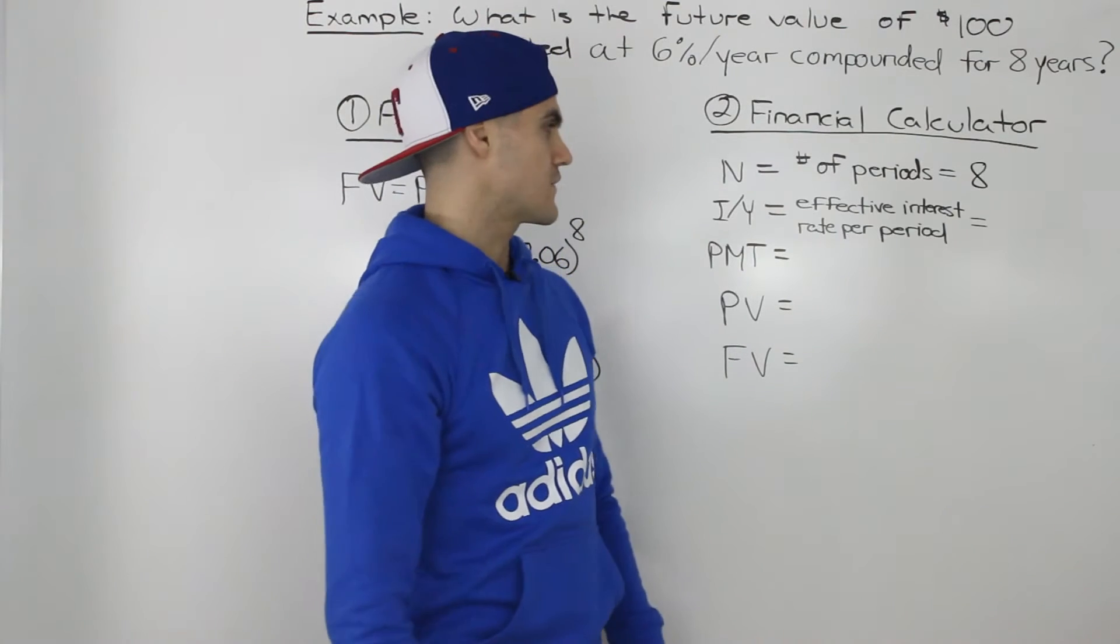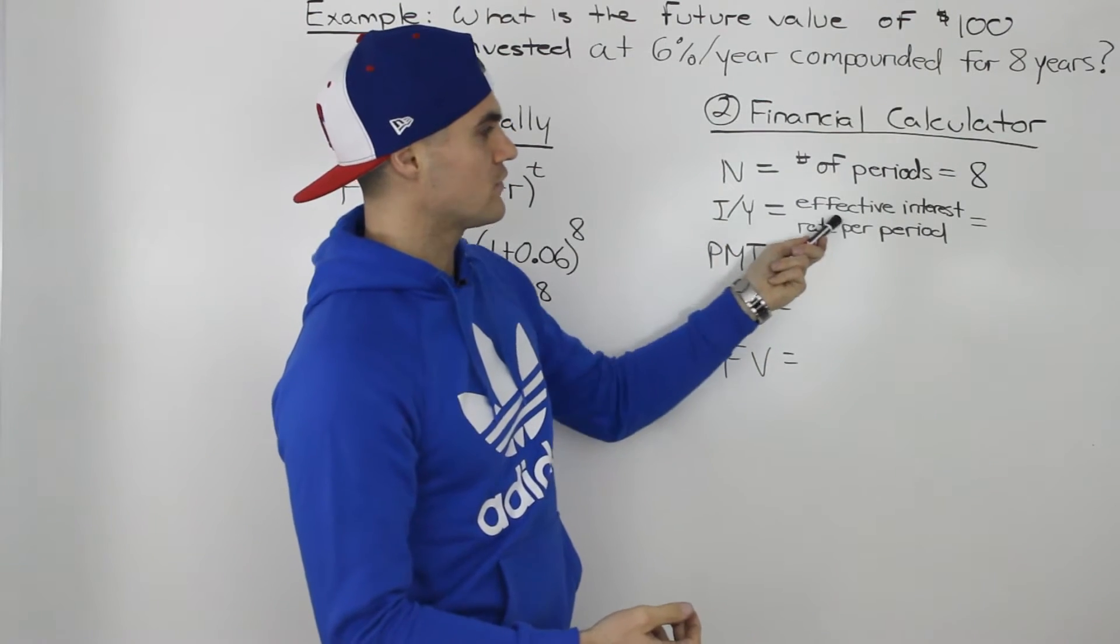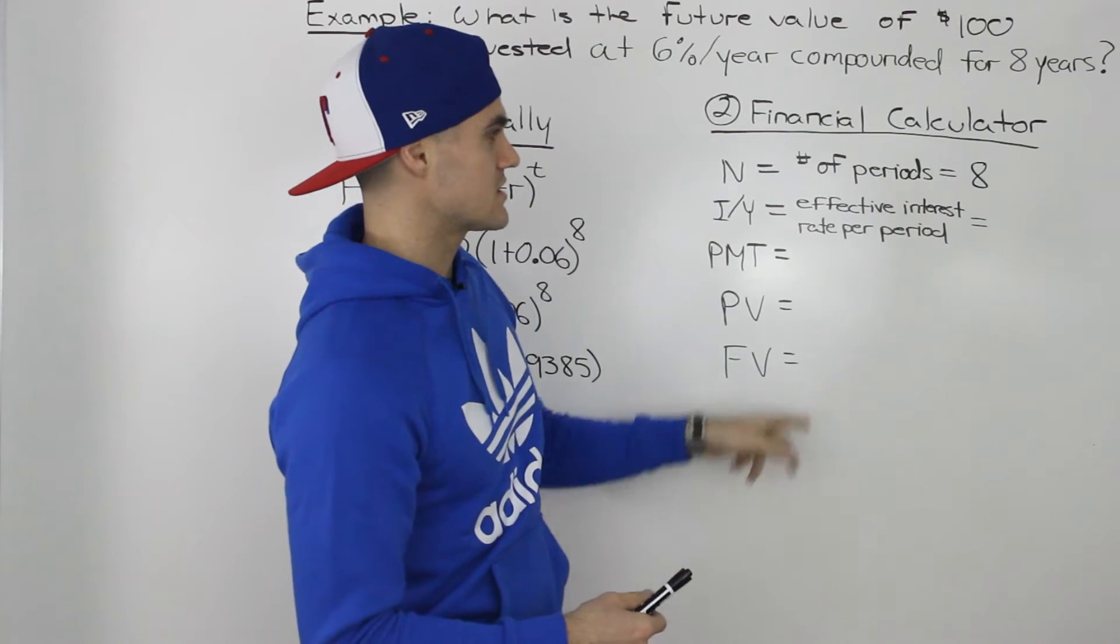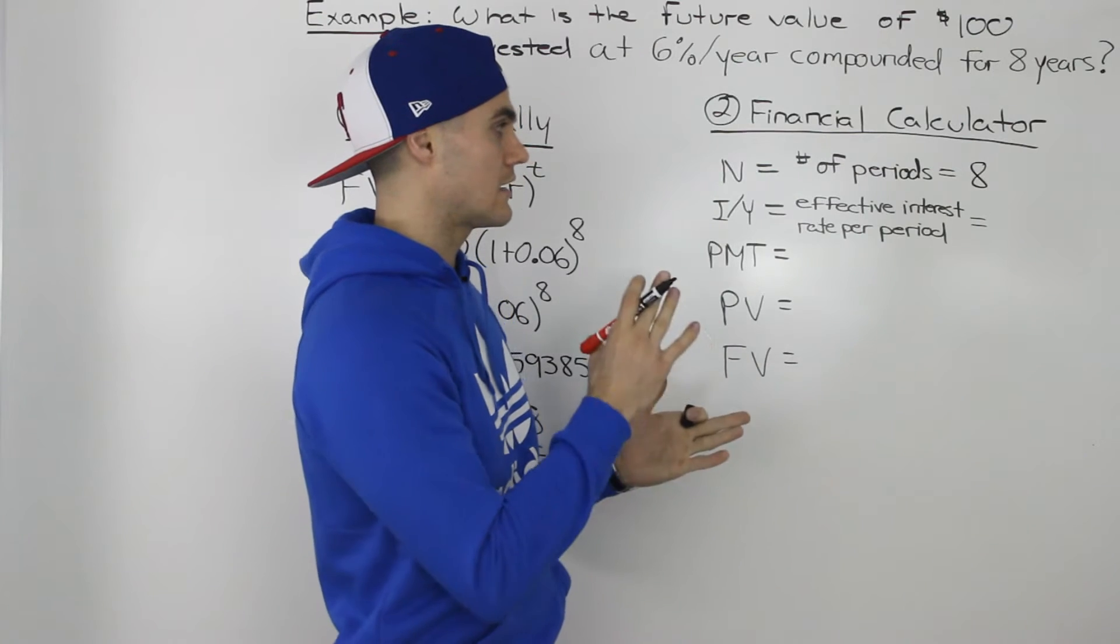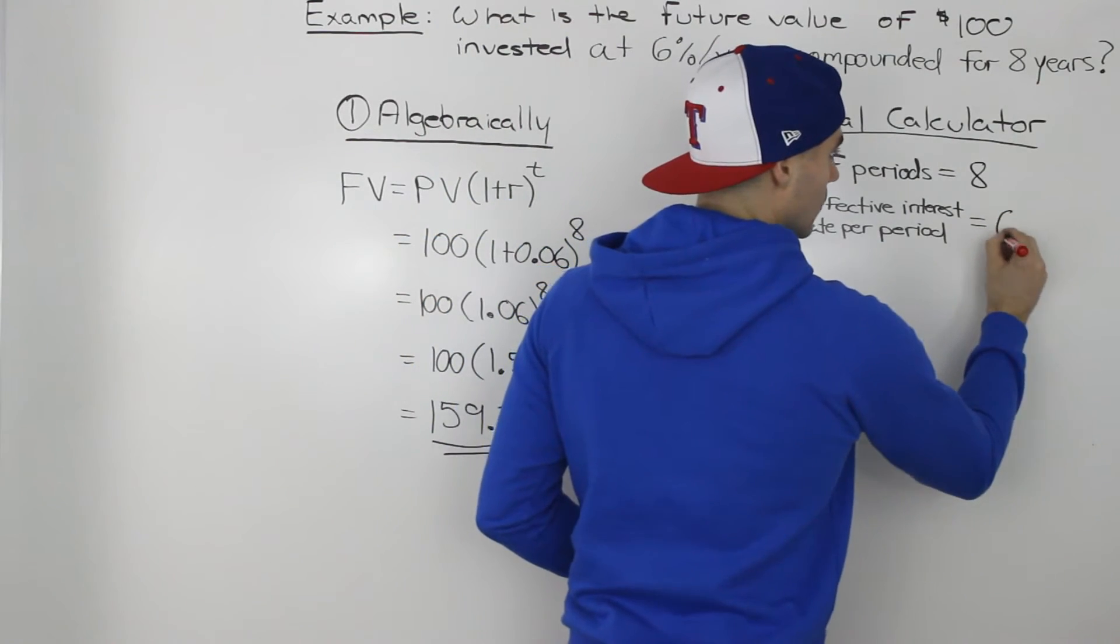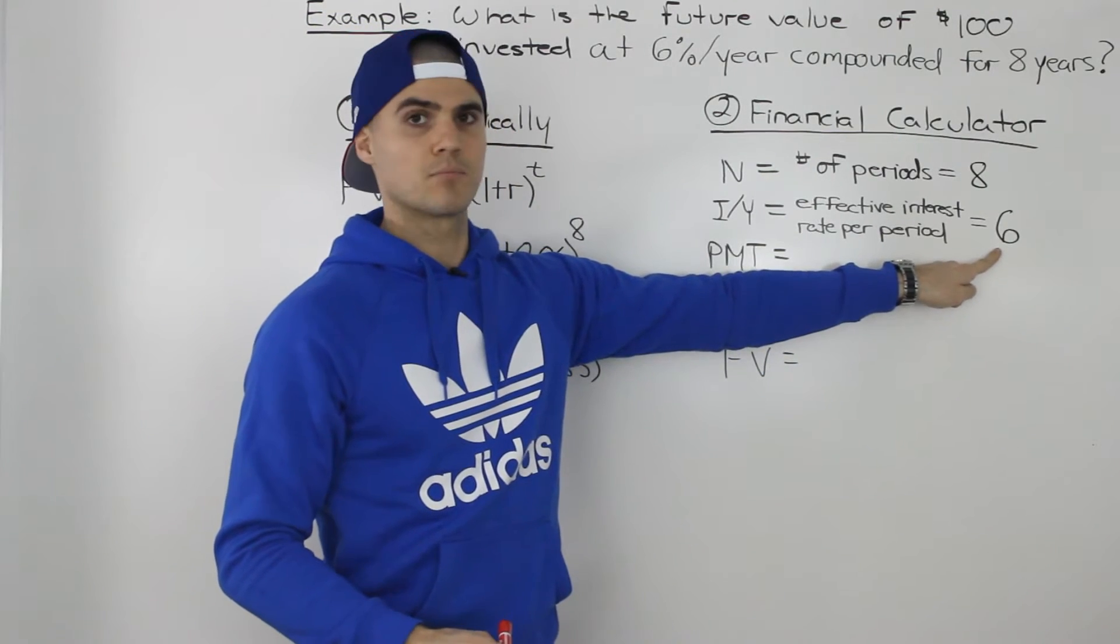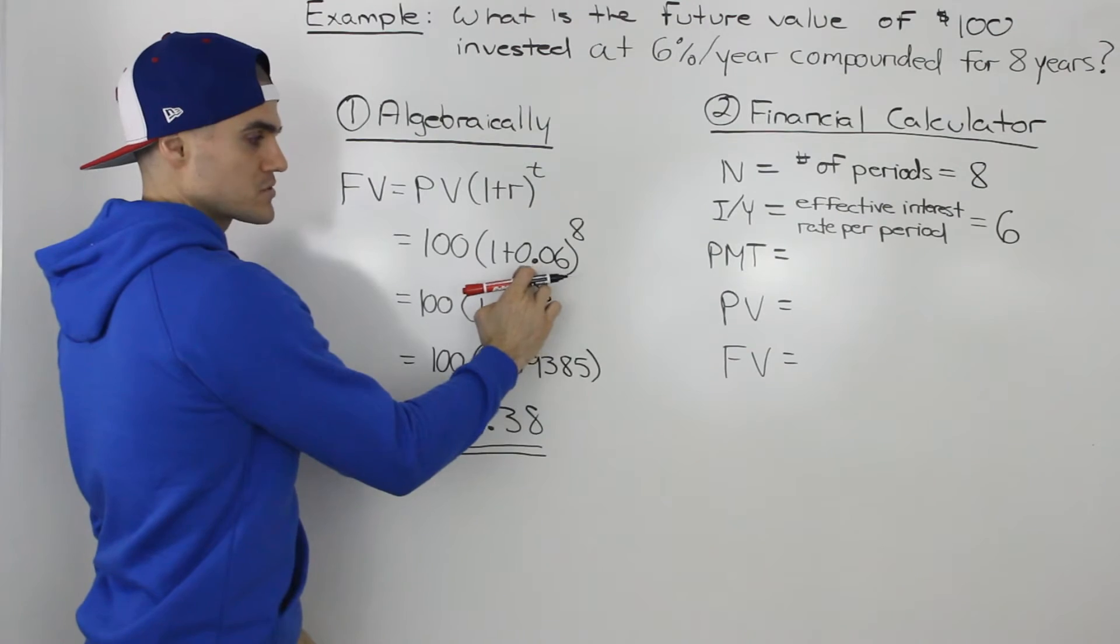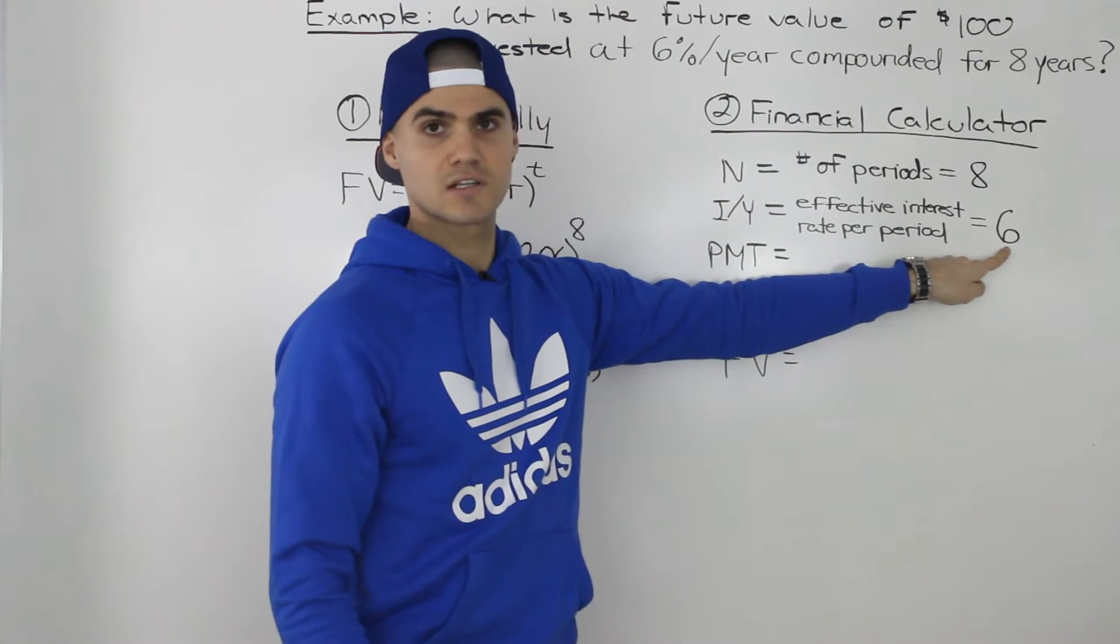The next variable, this I/Y, basically represents the effective interest rate per period. Now, the word effective will go into more detail in future videos, so perhaps maybe just ignore that word for now and just think of this I/Y as the interest rate per period. And we already established that the period of time we're dealing with in this scenario is years, so the interest rate per period is 6%. So this I/Y here would be 6. Now, most calculators want you to put this in percentages, so you would put the actual 6 here. Notice when we did algebraically, for the R, we have to use the decimal form, so it would be 0.06. But when you're inputting it into most financial calculators, this has to be in percentages, so you would just leave it as 6.